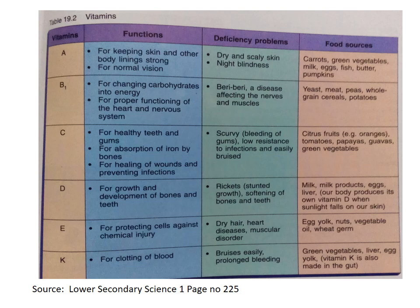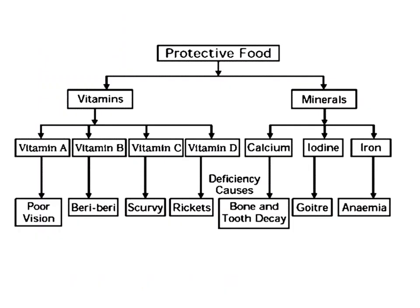Vitamin K is important for clotting of blood. If we get hurt or we are bleeding, vitamin K is essential for blood clotting. Its deficiency can cause bruises easily and prolonged bleeding. Food sources include green vegetables, liver, egg yolk, and vitamin K is also made in the gut. So these — vitamins and minerals — are protective foods.